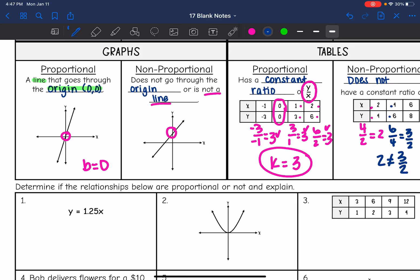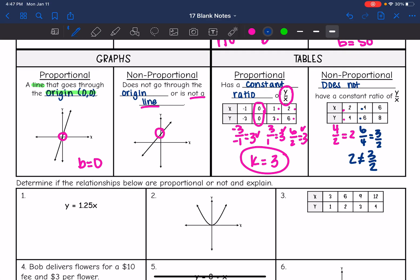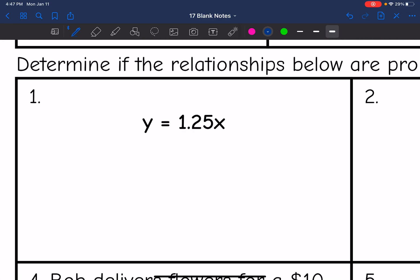Now we're just going to do a few examples where we determine if they are proportional or not. So this first one right here is an equation. Remember, equations have to be written in the form y equals kx, which it looks like this one is. So this one would be proportional.